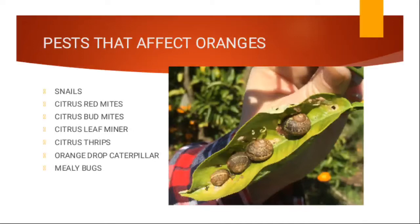Then we have the orange dog caterpillar. This is a special type of caterpillar that will attack your trees — it will attack the leaves, the bark of the tree, and so forth. Then we have the mealy bugs. These are whitish in color. They attack the leaves and are mostly found on the lower side.